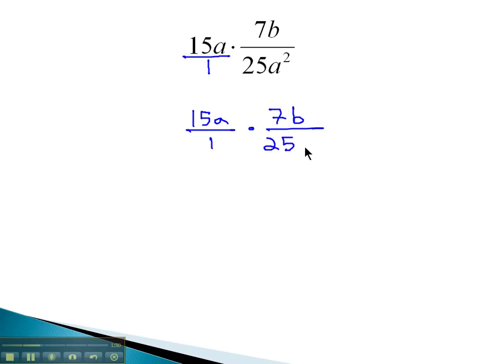Recall, we can write the a squared as a times a, so we can see what reducing is allowed. We'll see we have a common factor in 25 and 15 of 5 again. 15 divided by 5 is 3, and 25 divided by 5 is 5. We can also divide one of the a's out of the numerator and denominator as well.